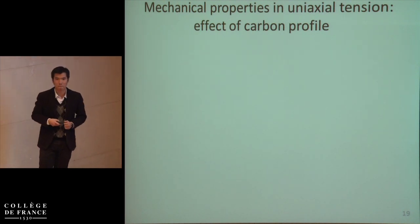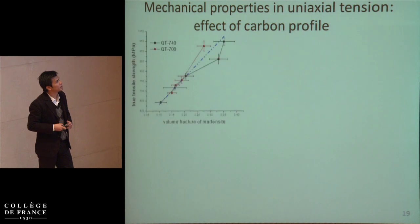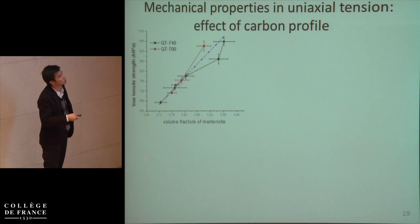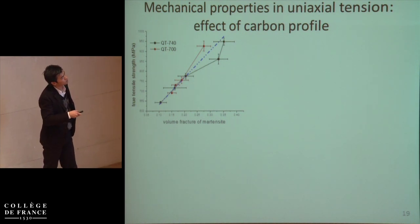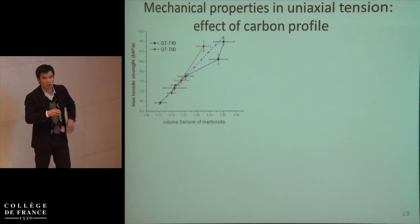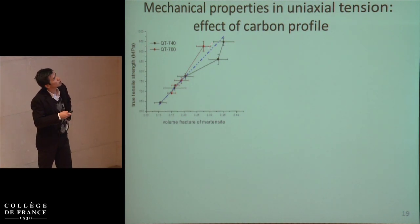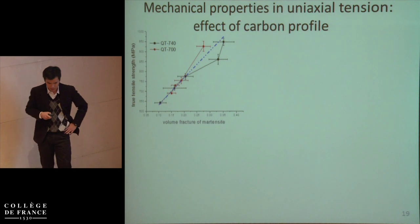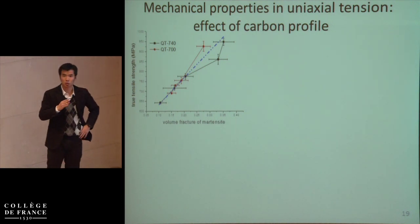Then I do the tensile test to probe macro-mechanical behavior. This graph describes the evolution of tensile strength with volume fraction of martensite. Both reference alloys at different annealing temperatures share the same linear relationship between strength and volume fraction of martensite at lower fractions, but at larger volume fractions the difference comes out. For QT700 — annealed at 700°C — even with less martensite it can achieve a better strength level, and even similar strength level as QT740 with more martensite. This means martensite at lower annealing temperature has better strengthening efficiency.